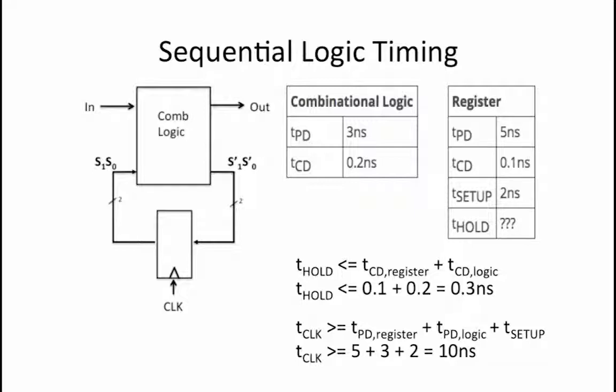Plugging in the given timing parameters, we find that tclock must be greater than or equal to 5 plus 3 plus 2, which equals 10 nanoseconds.